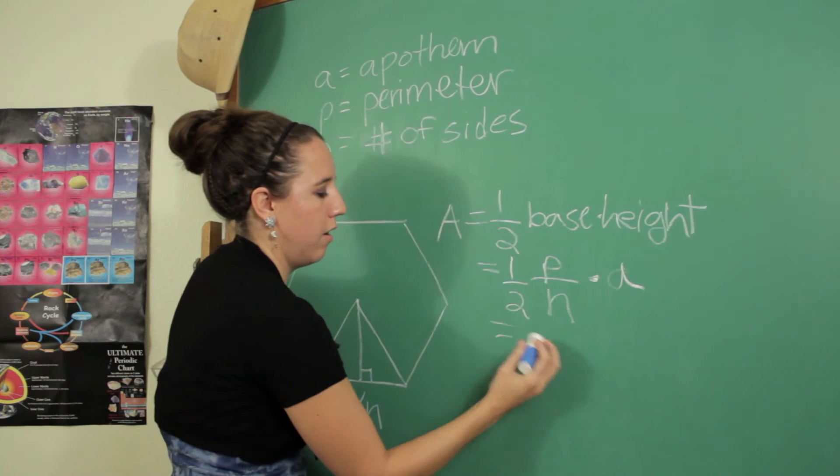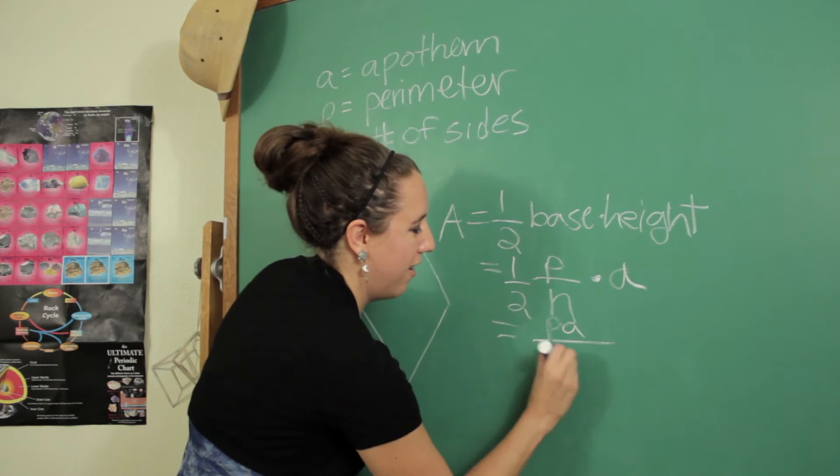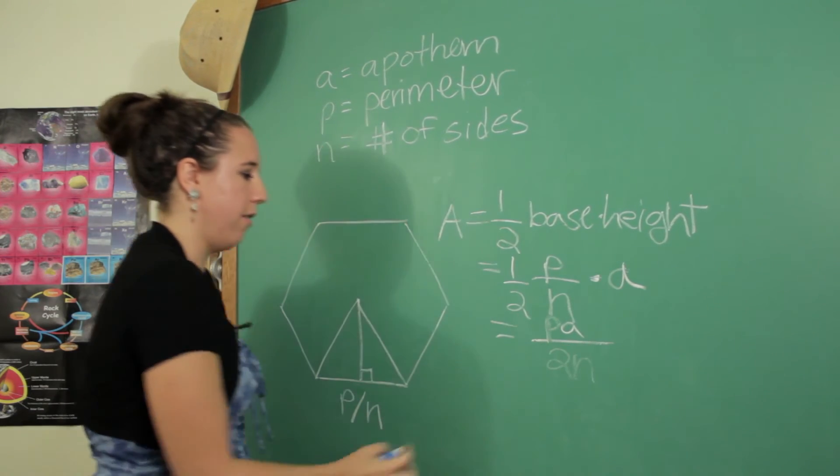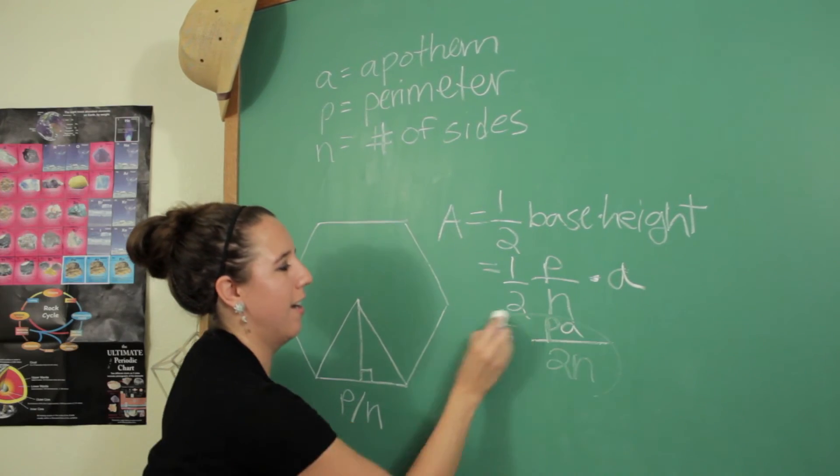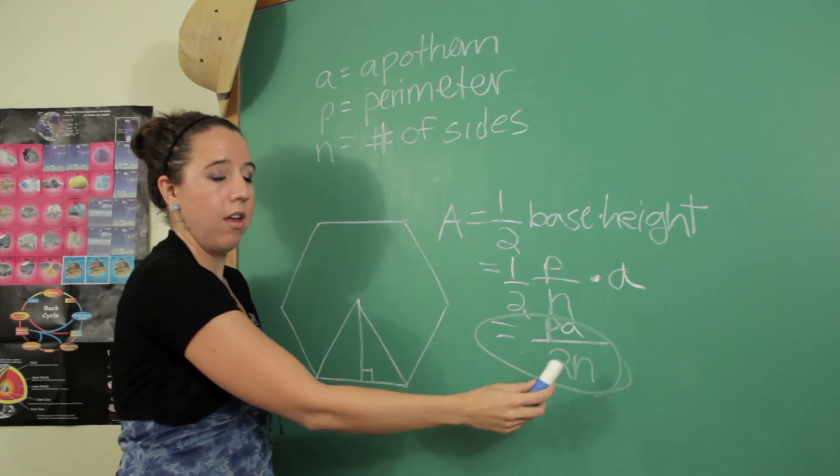Perfect. So we're going to kind of just combine all of that. So the area of one triangle is P times a over 2n.